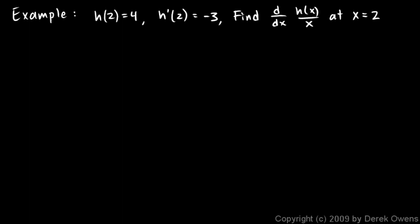Here's an example involving the quotient rule for derivatives. We're given this function h, and we're told that h of 2 is equal to 4. So if you want to get a mental picture, we know that the point is on this function. h is some function of x. And we're told that h prime of 2 is negative 3. So at x equals 2, the slope of function h is negative 3.